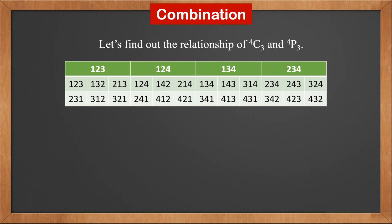If we select three out of four items, there are four cases. They are 123, 124, 134, and 234. That's the result of combination.